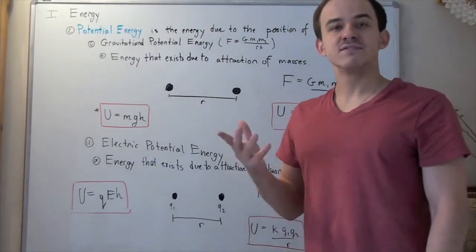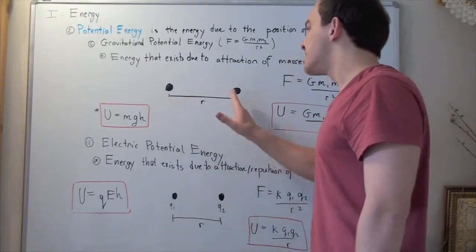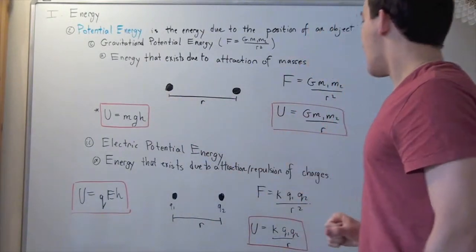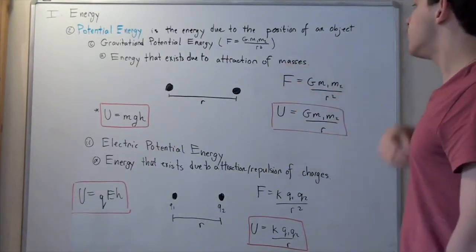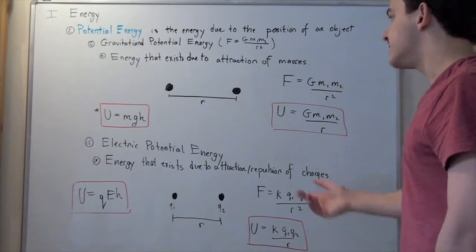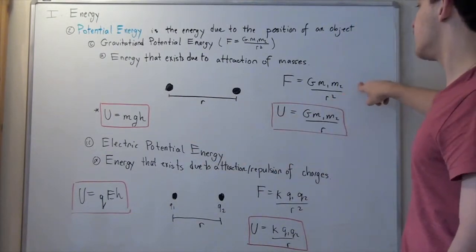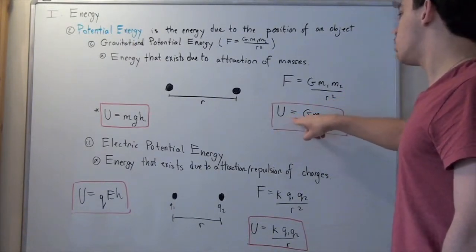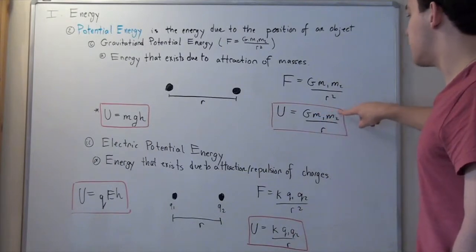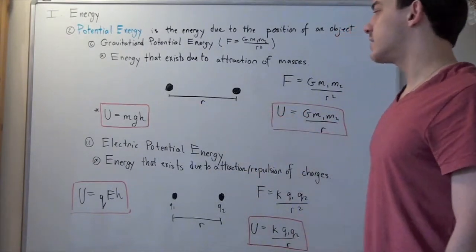So, if I want to find the energy due to the position of these two masses, I simply use the following formula. I take my force and multiply it by my D, my distance, in this case R. And what I see if I multiply it by R is that R's will cancel on the bottom and I'll have one R on the bottom. So, my energy is U equals G times mass one times mass two divided by R, the distance between their center of masses.